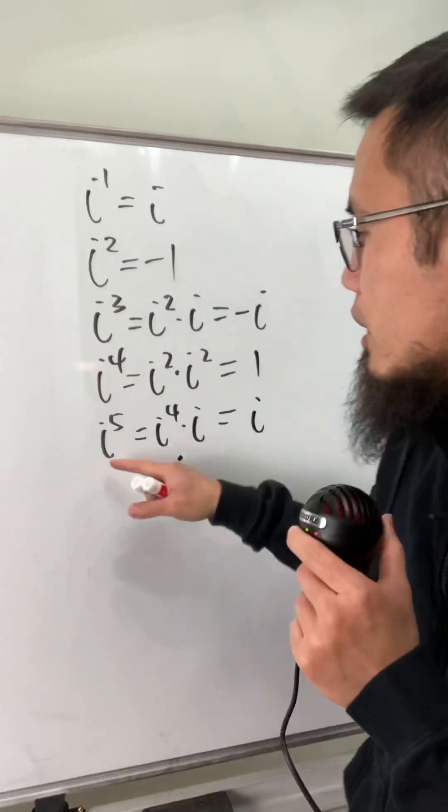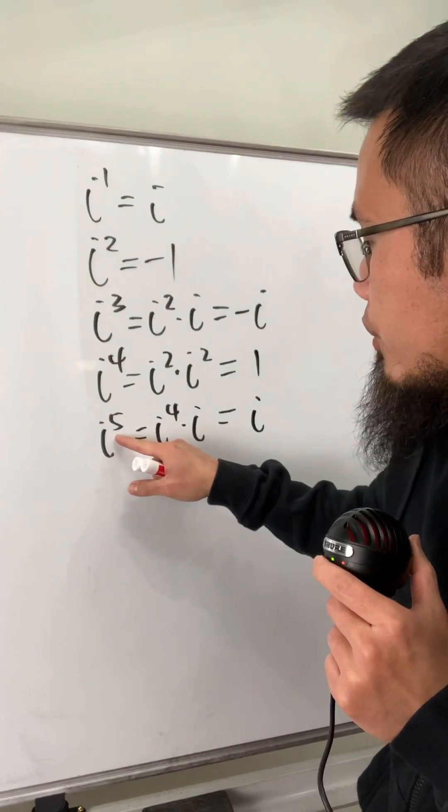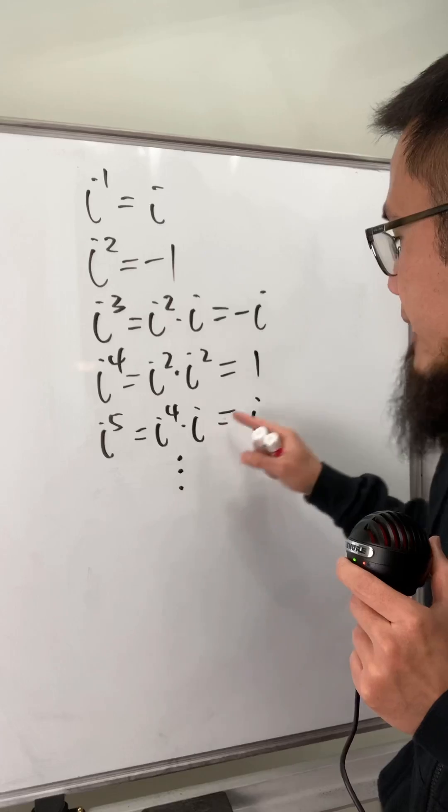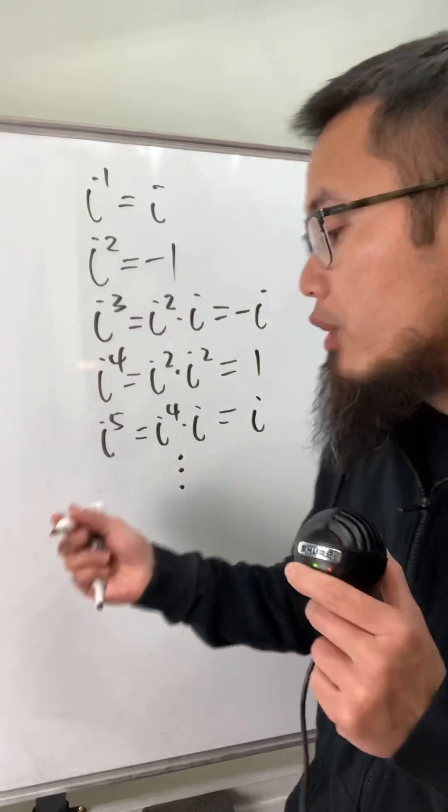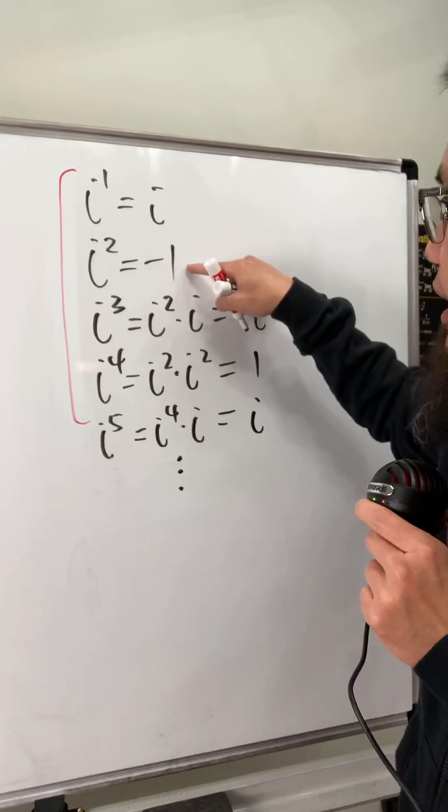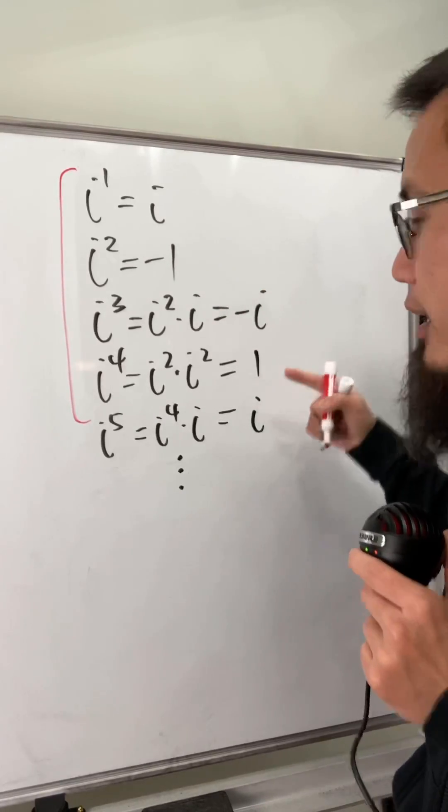If you keep going though, if you look at i to the fifth power, look at this as i to the fourth power times i. This is 1, so 1 times i is just equal to i. And at this point, you can see that it's going to continue and it's pretty much just going to be i, negative 1, negative i, and 1, and so on.